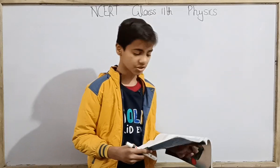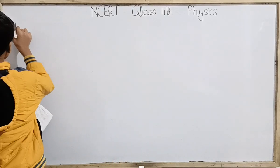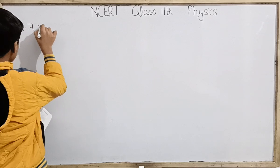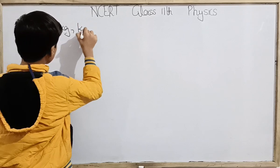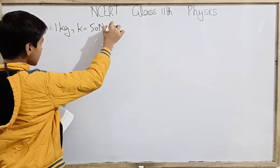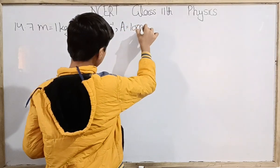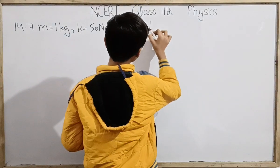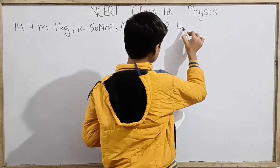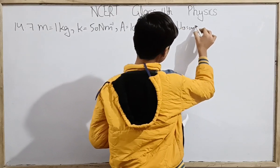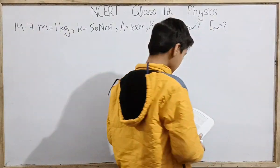Calculate the kinetic, potential, and total energies of the block when it is 5 centimeter away from the mean position. We have a block with mass 1 kilogram attached to a spring of spring constant 50 newton per meter. We pull it at 10 centimeter, so this is the amplitude 10 centimeter. We will find the kinetic energy, the elastic potential energy, and the total mechanical energy at 5 centimeter.